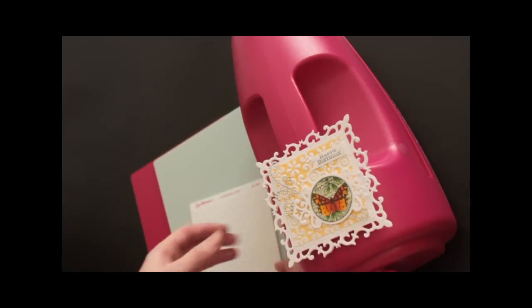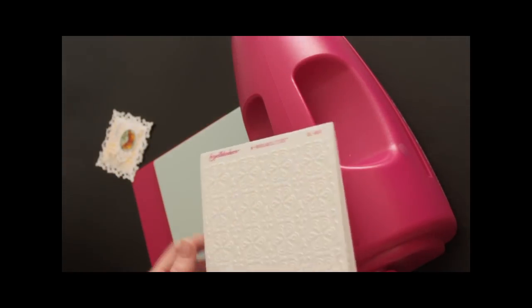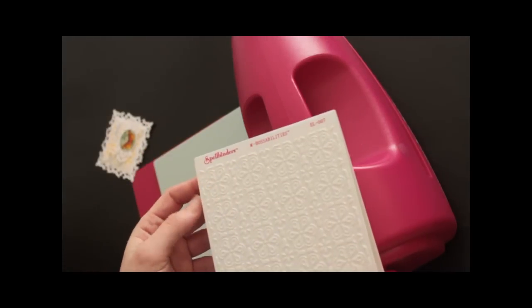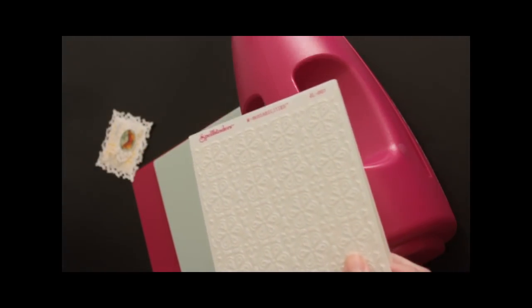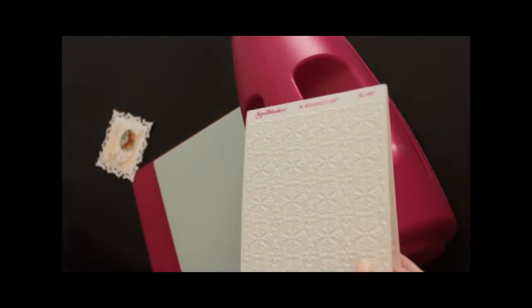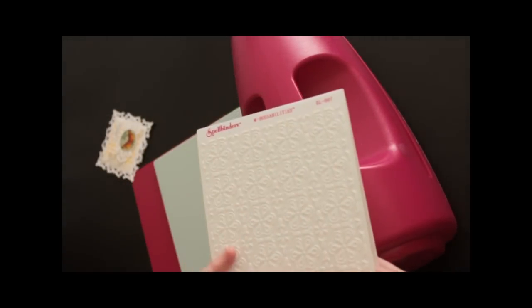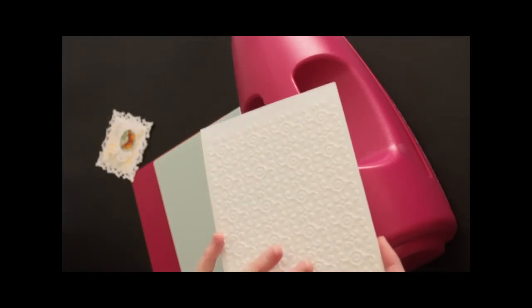To begin with, you will need an embossing folder. I'm using EmbossAbilities folder Elegance. What's wonderful about these new EmbossAbilities is that they come in two sizes: five by seven and four and a quarter by five and a half. They don't only have one design but they're reversible. You flip over the folder for another design. That's a great value.